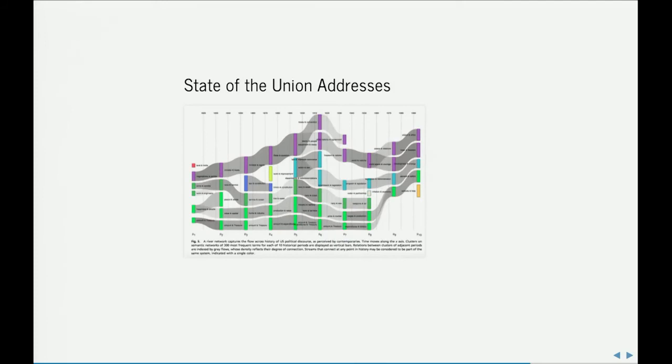Just like the 3D adjacency matrix I showed you, we can see topics evolving over time. Here we're seeing how different presidents have emphasized different topics over time using a Sankey diagram. It's an interesting way of projecting text as networks, and also a tool for reading — not unlike topic modeling.